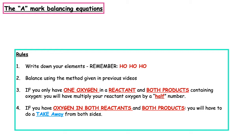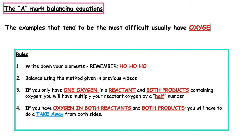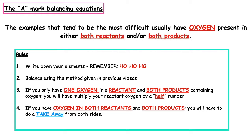In this lesson we're going to be looking at balancing equations at an advanced level — these are the A-mark style balancing equations. These examples tend to be the most difficult and usually have oxygen present in either both reactants and/or both products. Balancing the oxygen is the most difficult part, which is why we always remember step number one: ho ho ho — do all other elements, then hydrogen and oxygen last.